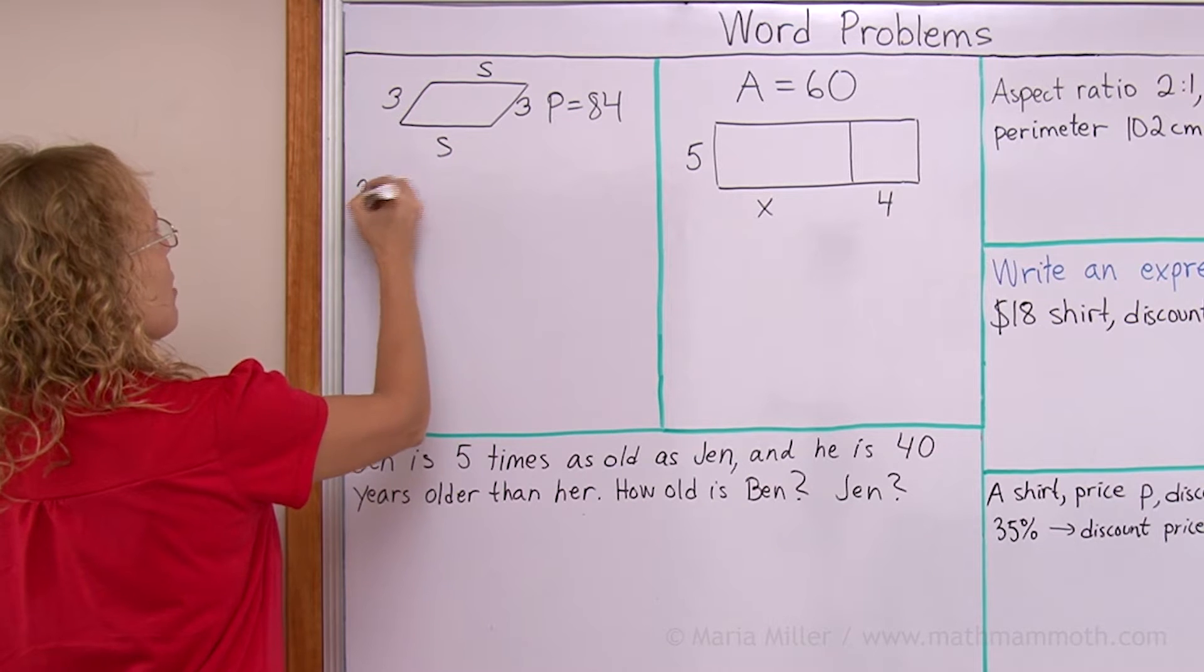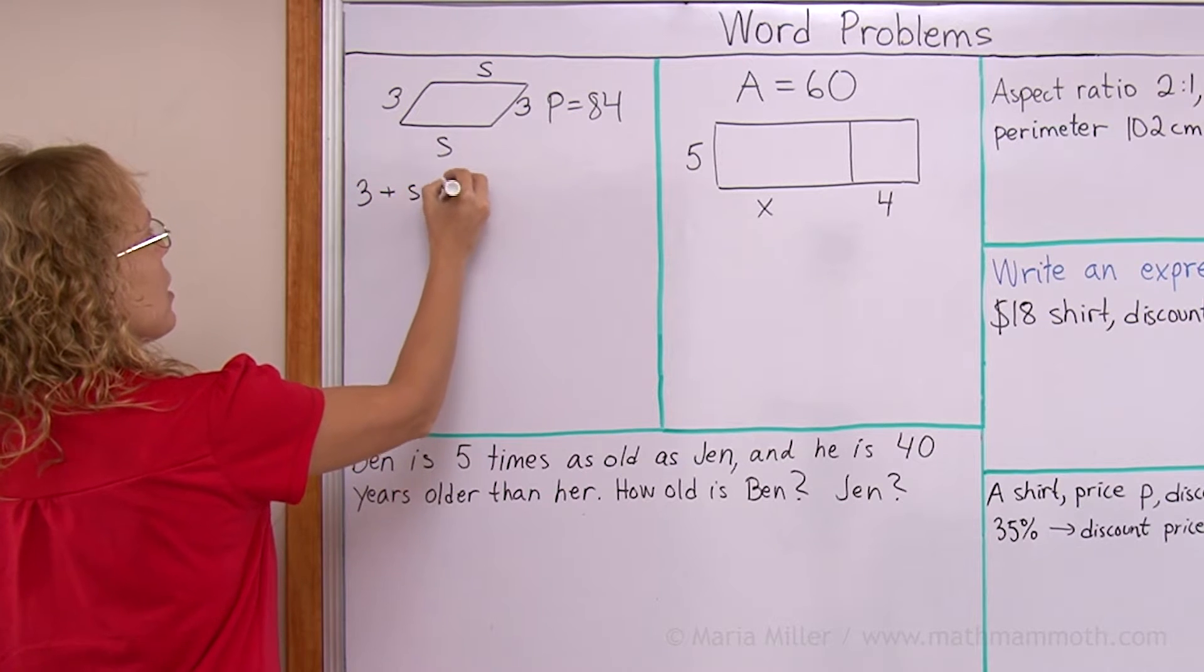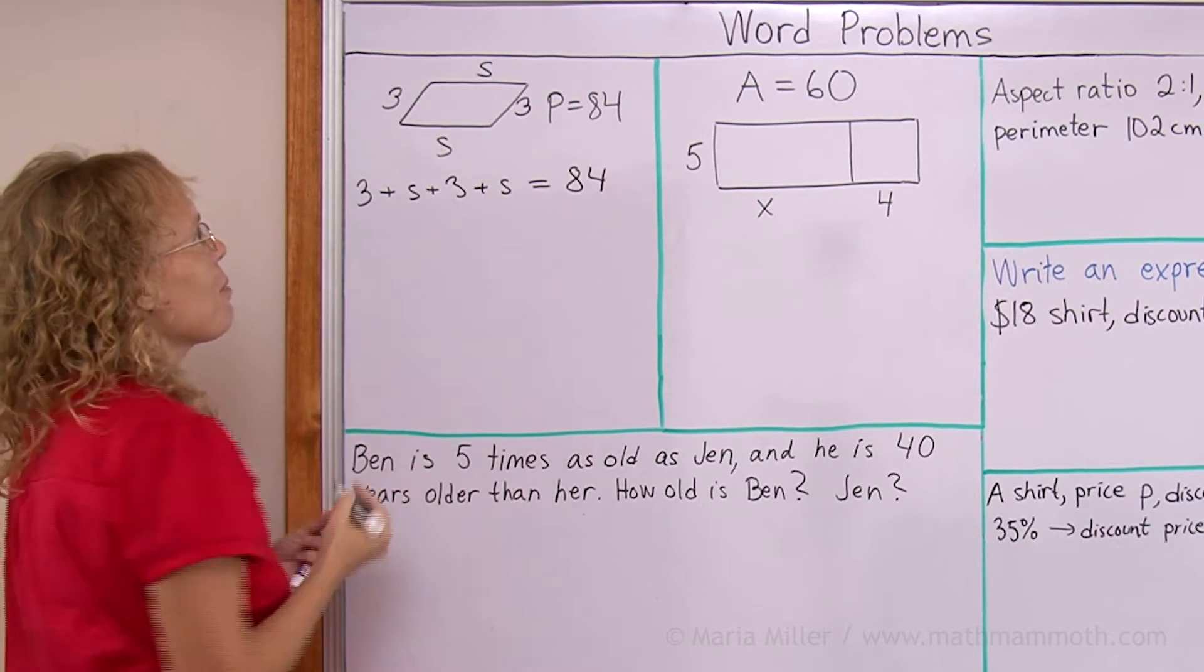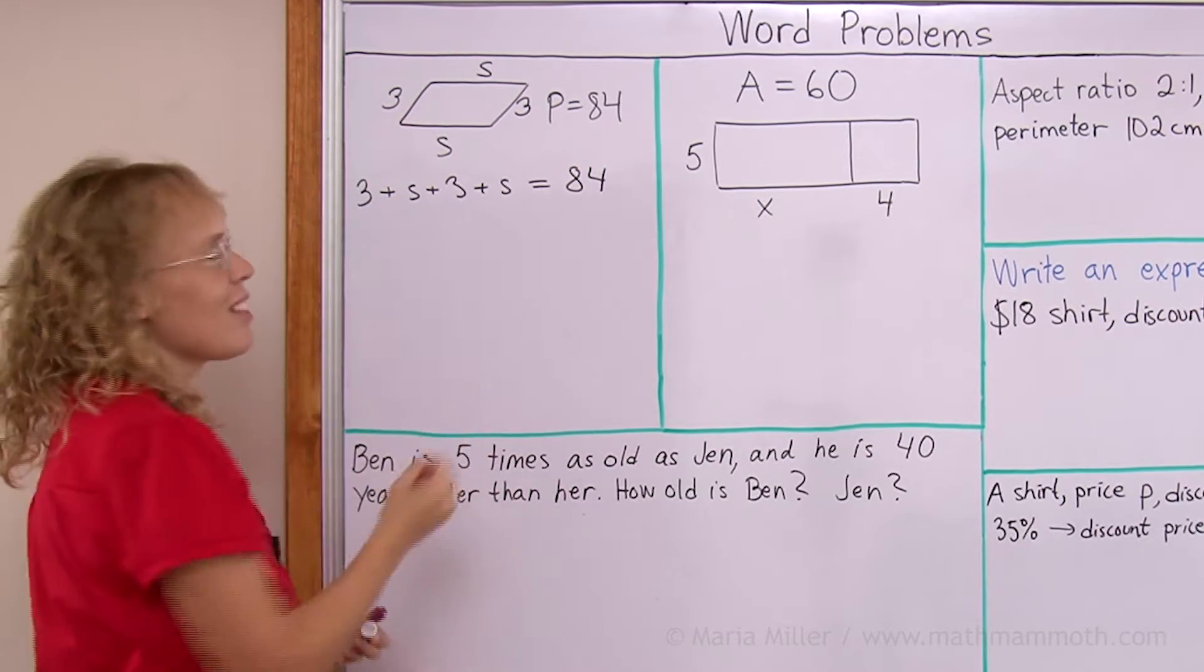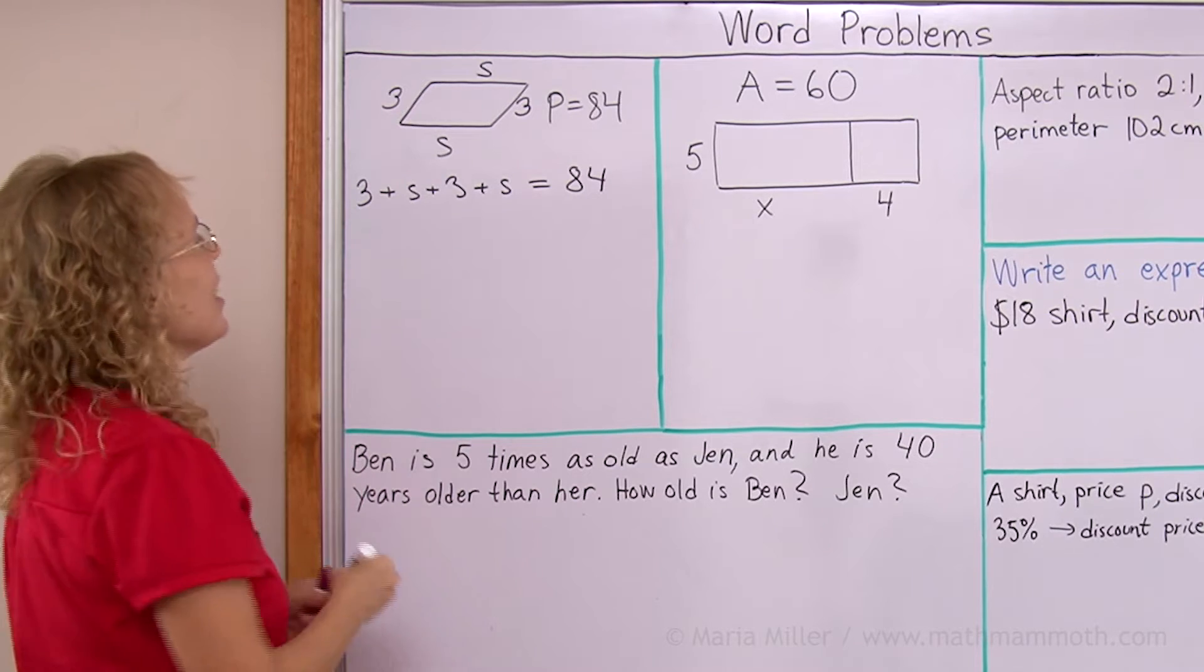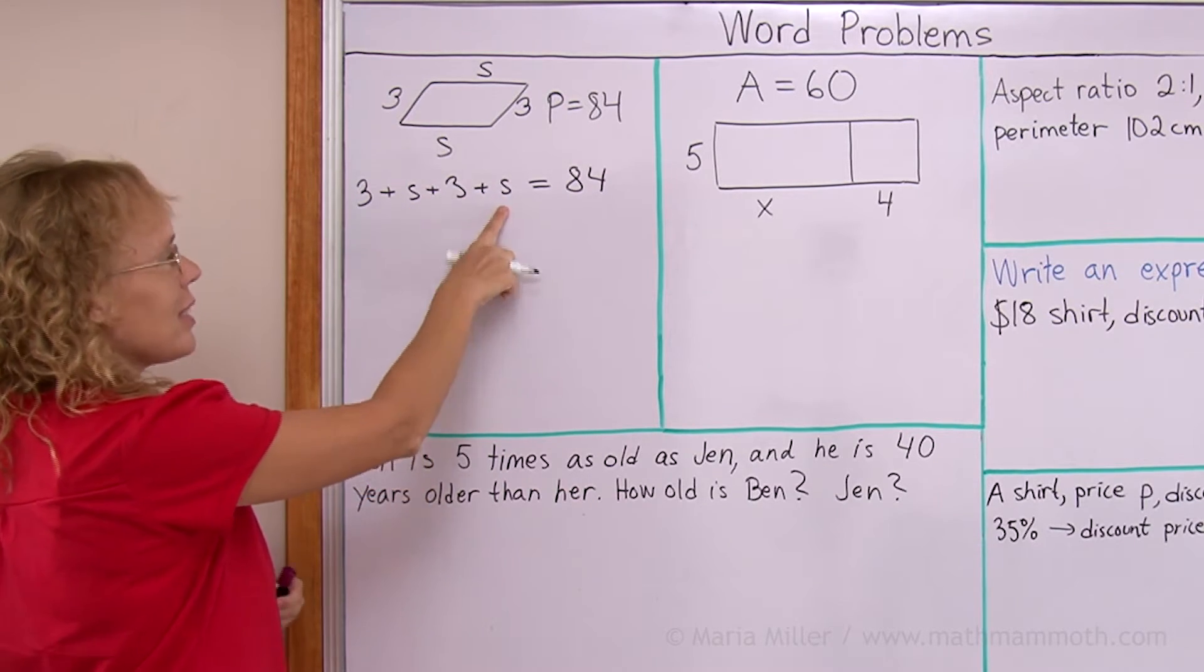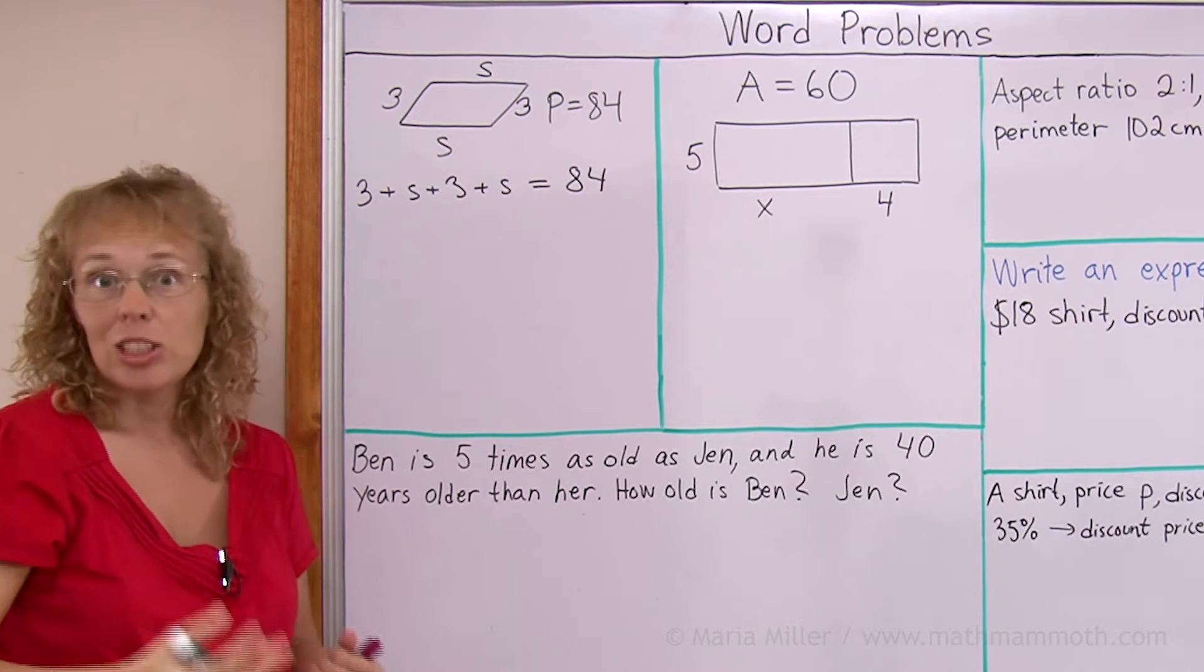Of course, perimeter, you add all those sides together and you get 84. So that's our equation. We add 3 plus s plus 3 plus s equals 84. If you get this equation written, then that's very good. Now, 3 plus 3 equals 6. And then s plus s we can simplify. It is 2s. So we get 2s plus 6 equals 84.